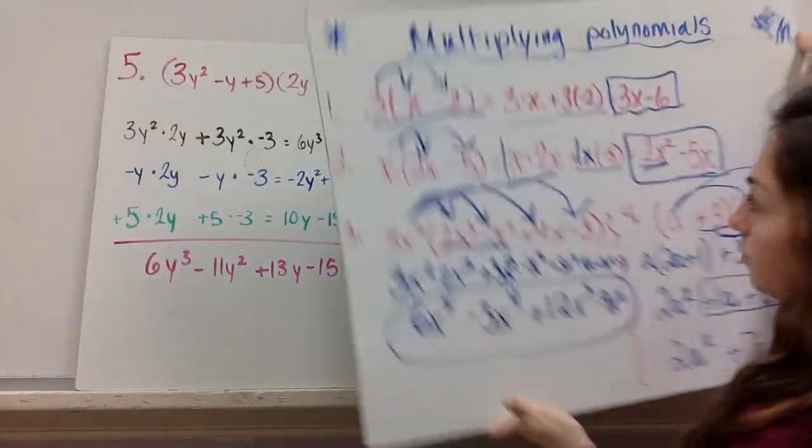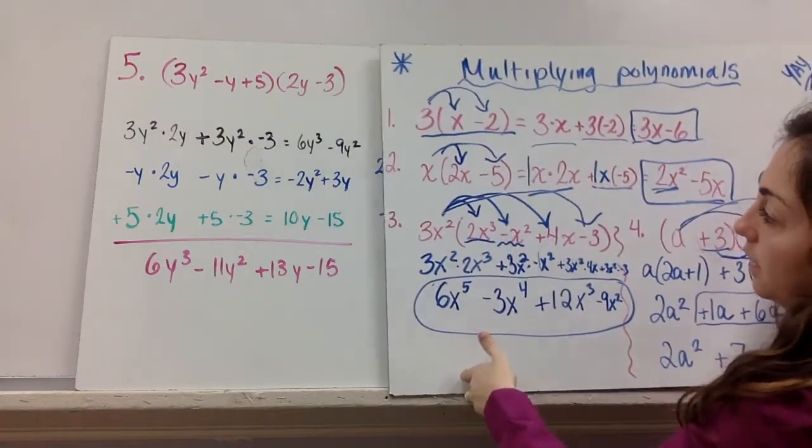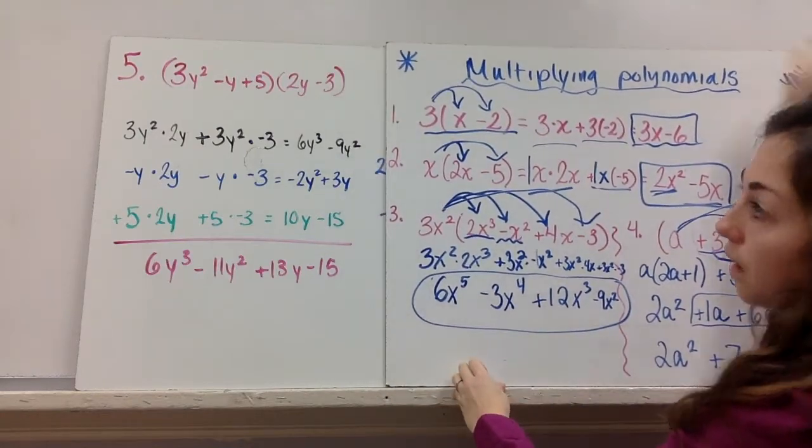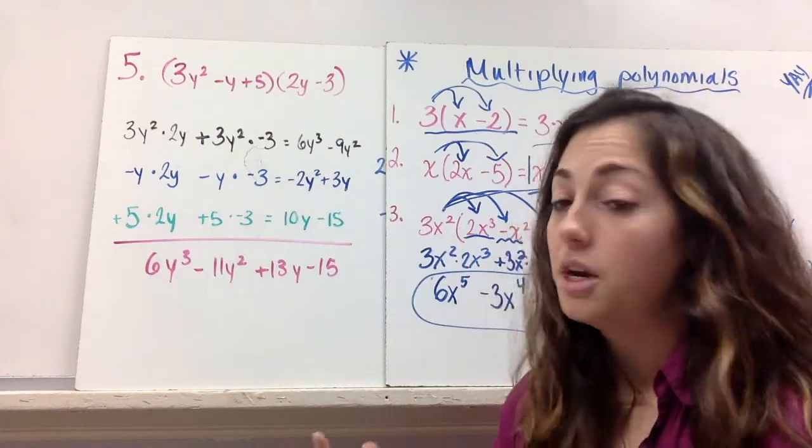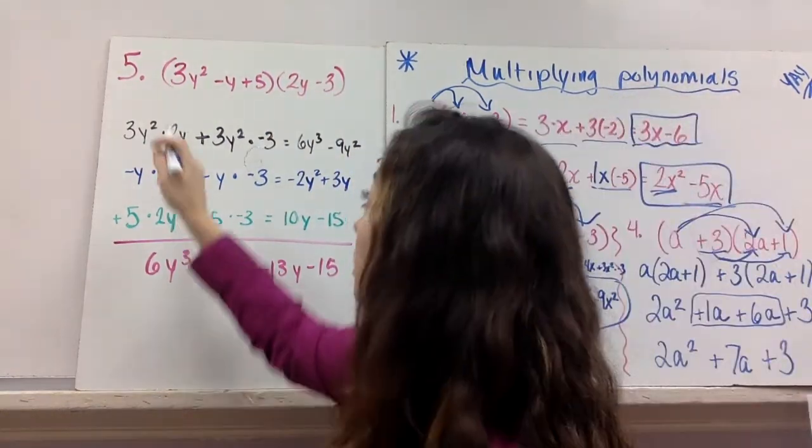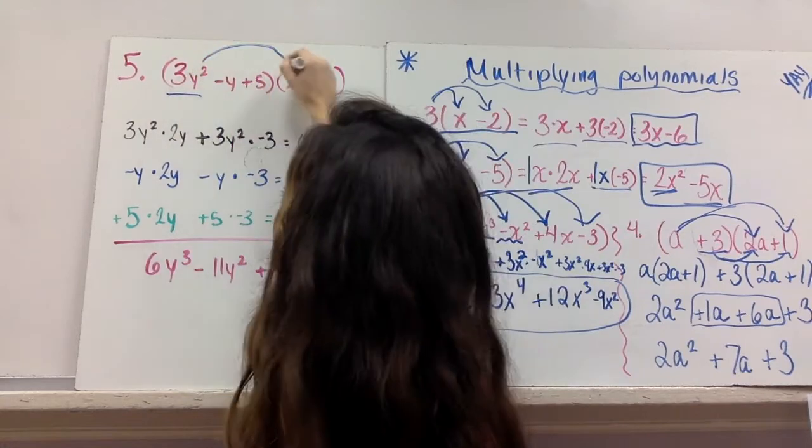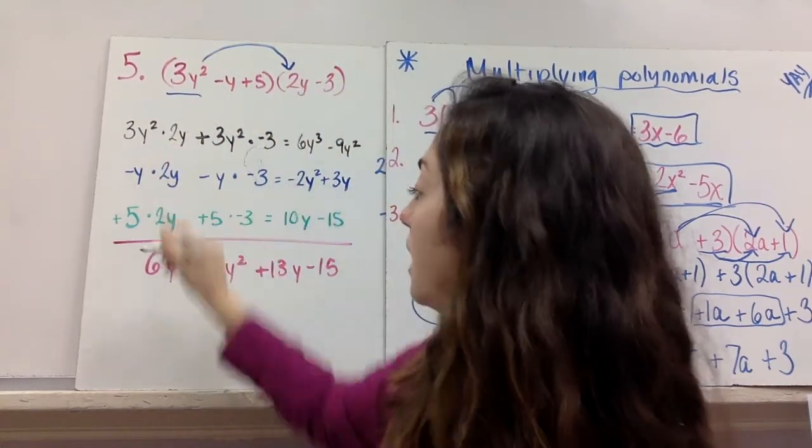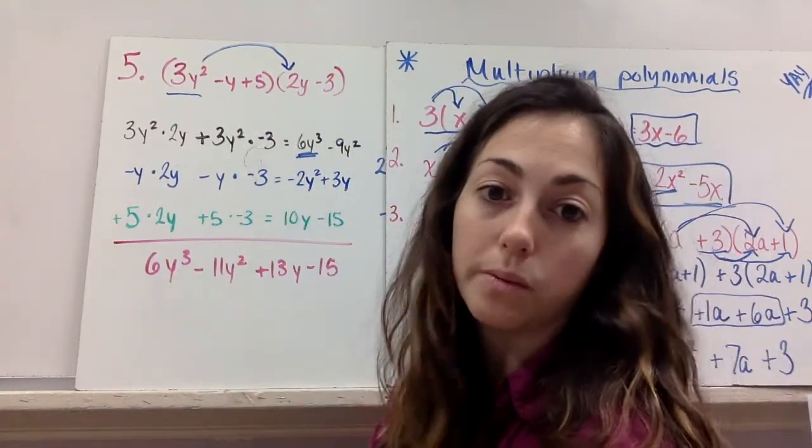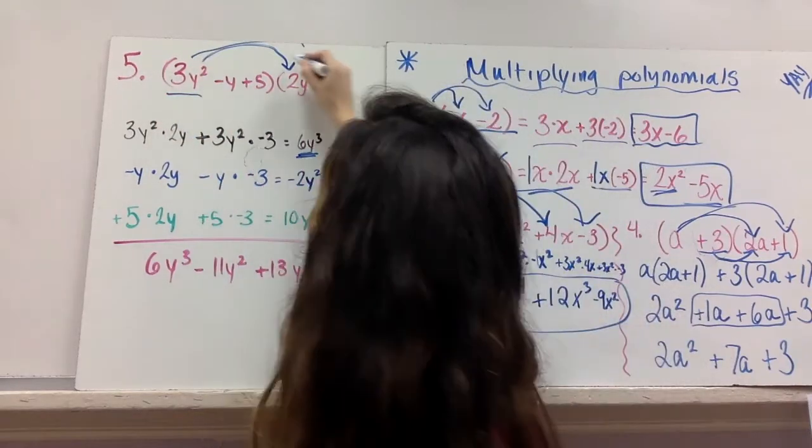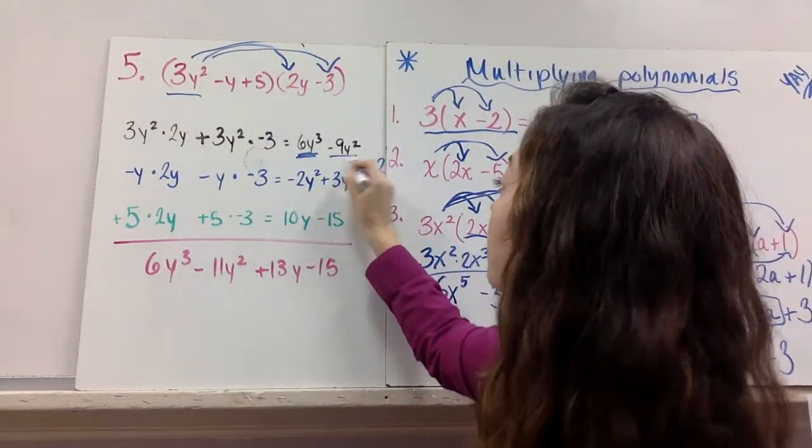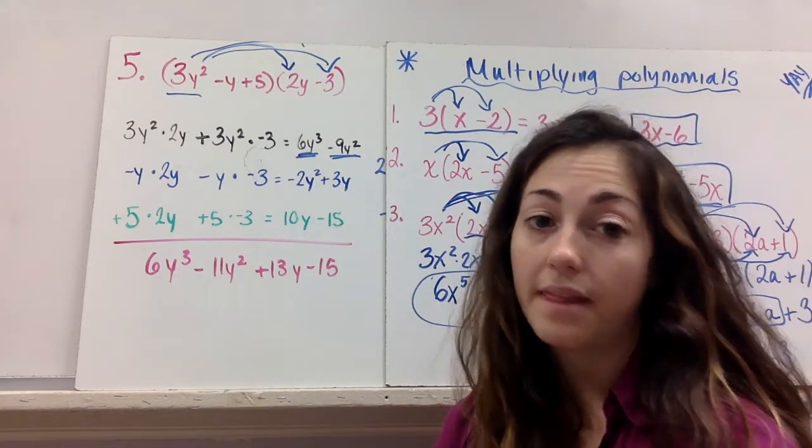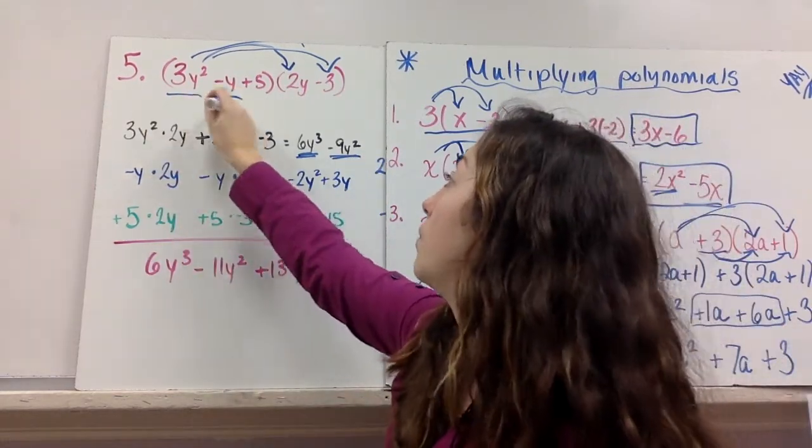Alright, so one last thing to show you. And it's really just a new method. Not really. We'll start with. Wow. So I've got here a trinomial times a binomial. Same thing. You've got to multiply 3y squared times 2y. And you get 6y cubed. Then 3y squared times negative 3. And you get negative 9y squared. Now this one is done.